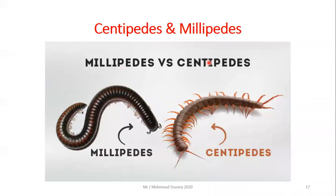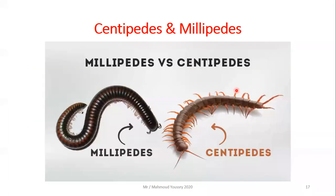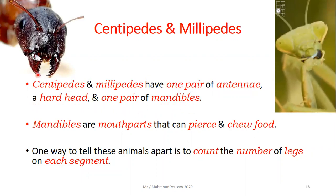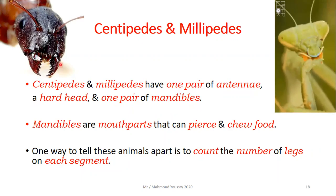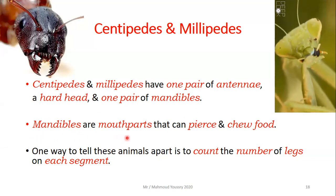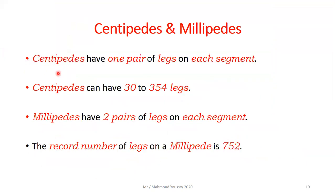The first type of arthropods is centipedes and millipedes. They have one pair of antennae on the head, a hard head, and one pair of mandibles — mouth parts that can pierce and chew food. One way to tell these animals apart is to count the number of legs per segment.